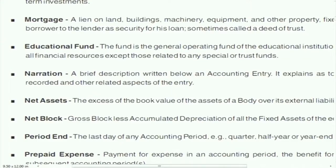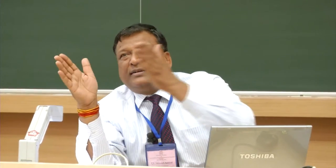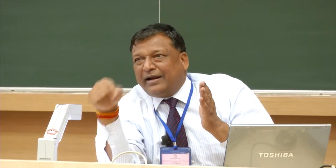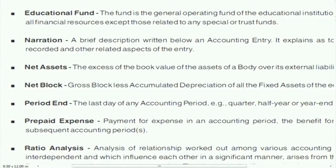Net assets: net assets are the excess of assets over liabilities. Net is sometimes used in terms of current assets, fixed assets, or total assets. Net asset means assets minus liabilities. For current assets, current asset minus current liability gives net current asset. When a liability is netted against an asset, it becomes a net asset.